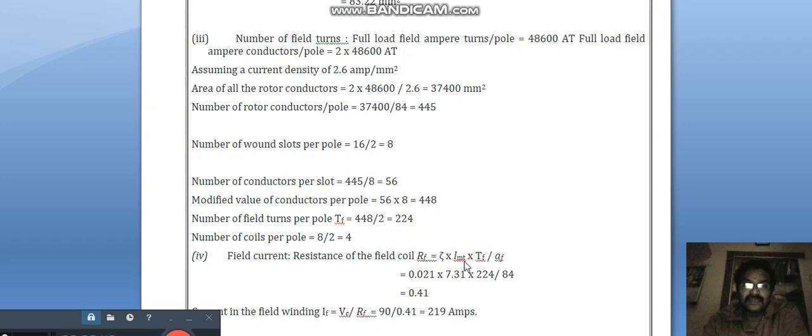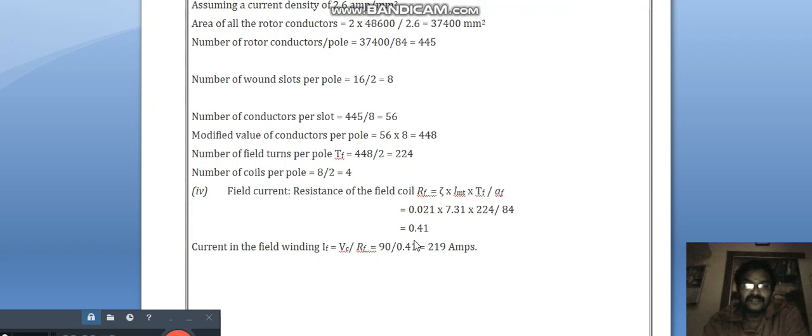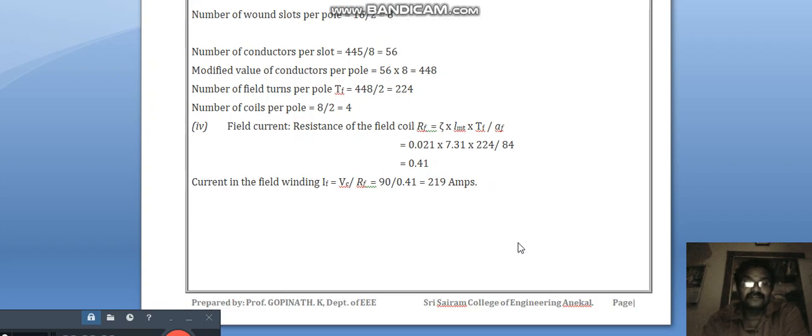Field current resistance of the field coil, R_f is equal to LMT multiplied by T_f / A_f. When you substitute the values, we will get 0.41. Current in the field winding, I_f is equal to V / R. So, V_f / R_f is equal to 90 / 0.41. The current is equal to 219 ampere.